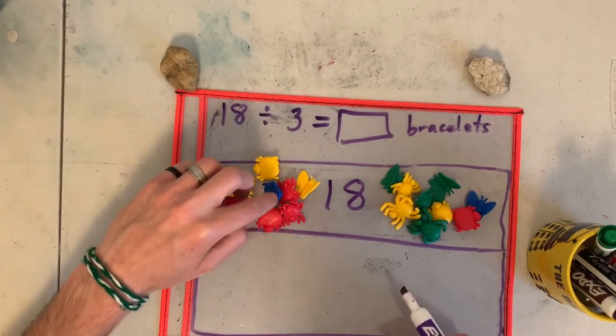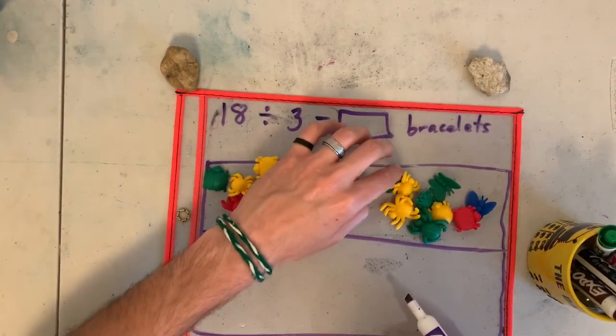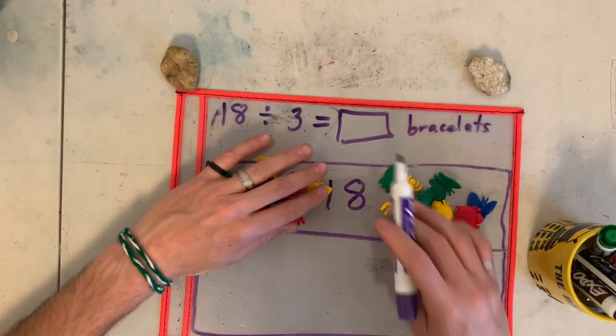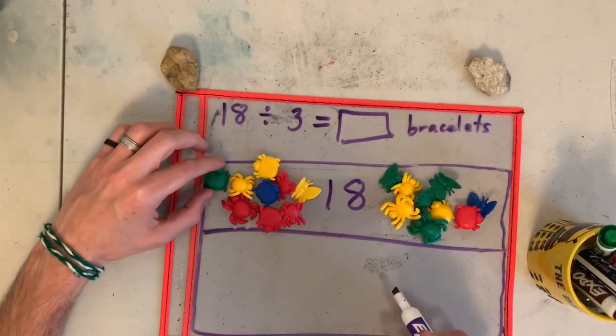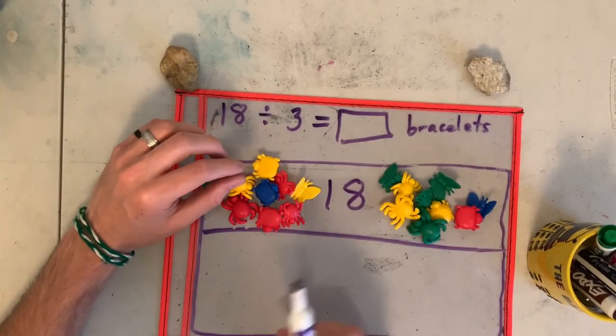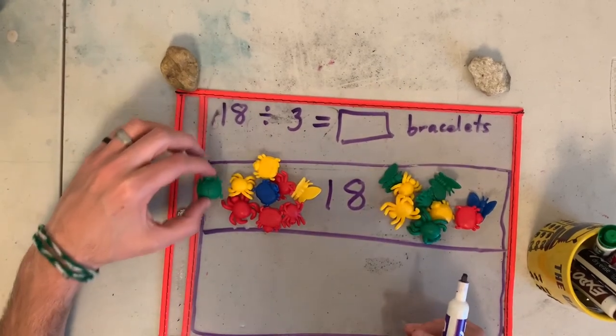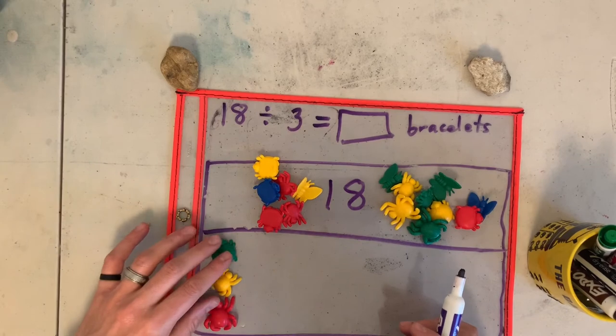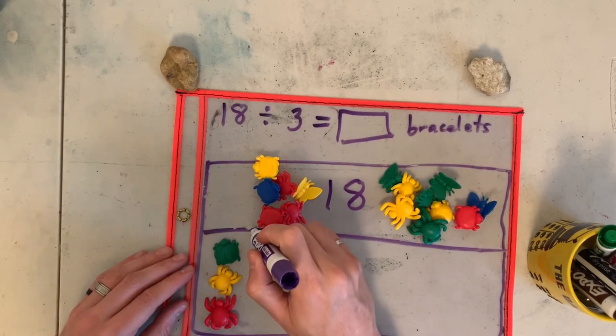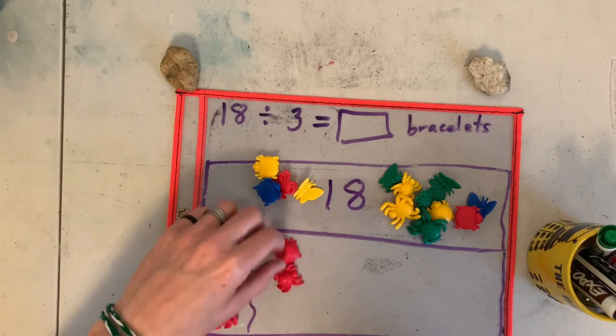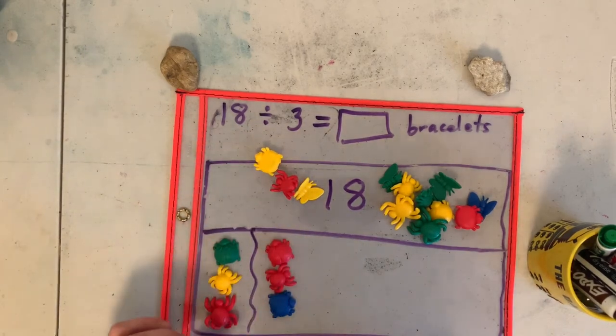So I have 18. One, two, three, four, five, six, seven, eight, nine, ten, eleven, twelve, thirteen, fourteen, fifteen, sixteen, seventeen, eighteen. So I have 18 beads. Let's divide into groups of three. I'm going to share. I'm going to give every group three beads. I have one, two, three—this is one bracelet. One, two, three—this is another bracelet.